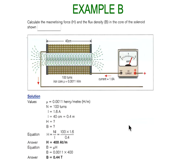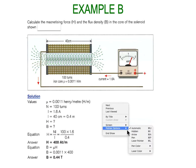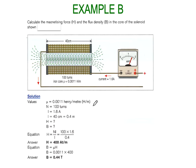Let's look at a second example. Calculate the magnetizing force H and the flux density in the core of a solenoid. We've got a 40 centimetre core, 100 turns, the iron core has an absolute permeability of 0.0011 Henrys per metre, and we've got a magnetizing current of 1.6 amps. We've listed all the data on screen. Don't forget we're working in metres, so we convert 40 centimetres quickly into 0.4 of a metre.